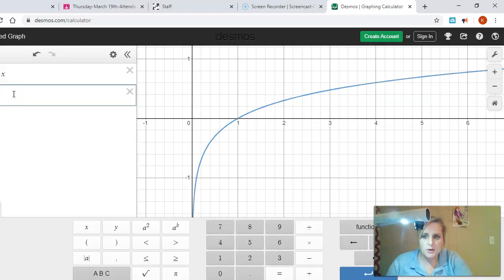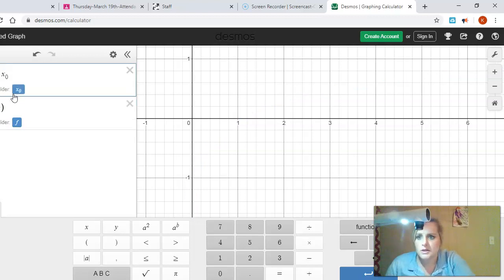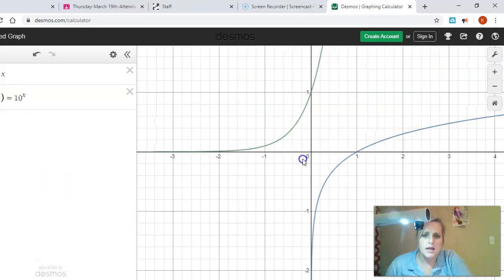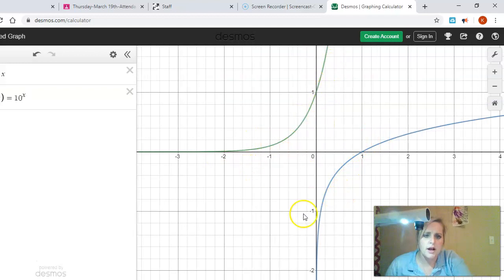Now the second one on your note sheet that you're supposed to be typing in is f of x equals 10 to the x. You can see my little pointer finger, the a to the b power. And I want to raise that to the x power. Now, then you can see that one graphed in green. So it's got your blue graph here and your green graph there.